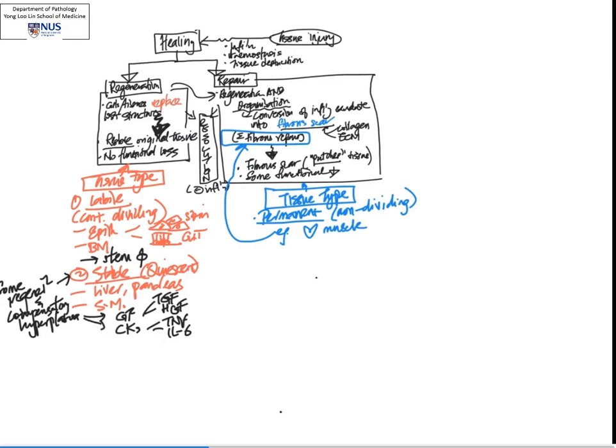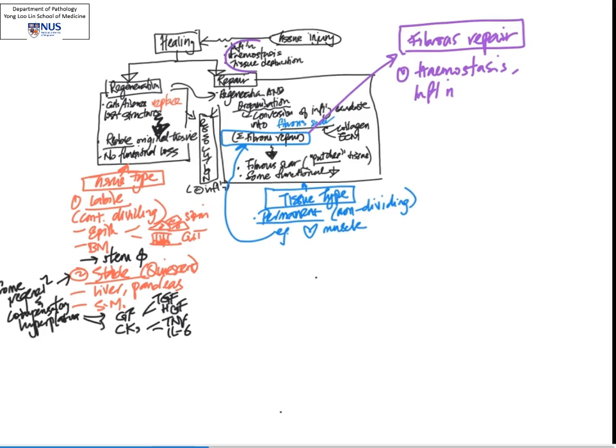Hi, so now we're going to focus on the processes that occur within fibrous repair. I'm not going to go into very much detail, just highlight the main processes. We have to remember that initially, right at the beginning of everything, there was tissue injury. What's going to happen directly as a result is hemostasis with the formation of fibrin, as well as inflammation as shown here, and then after that there will be granulation tissue that develops.